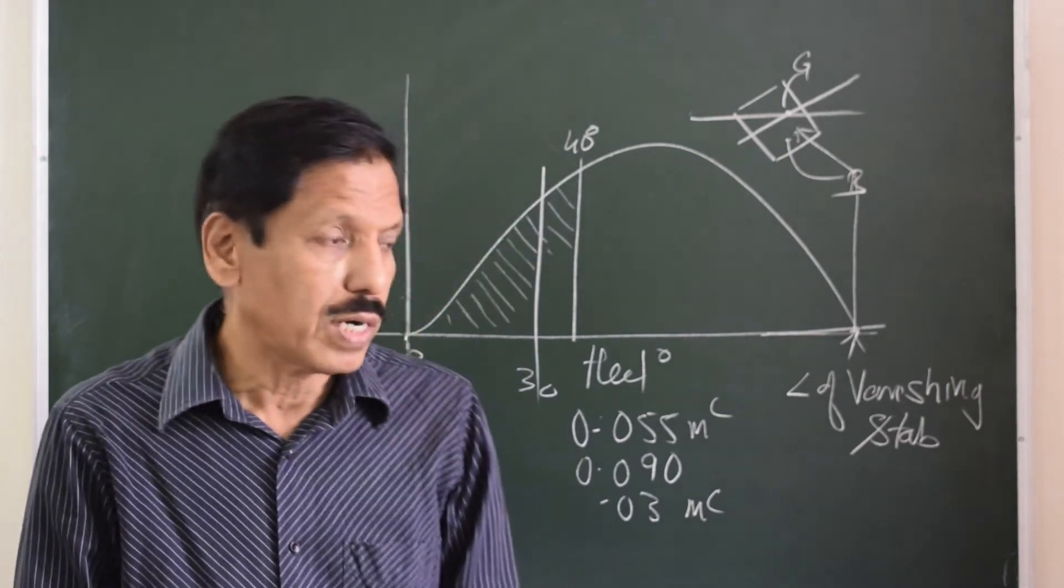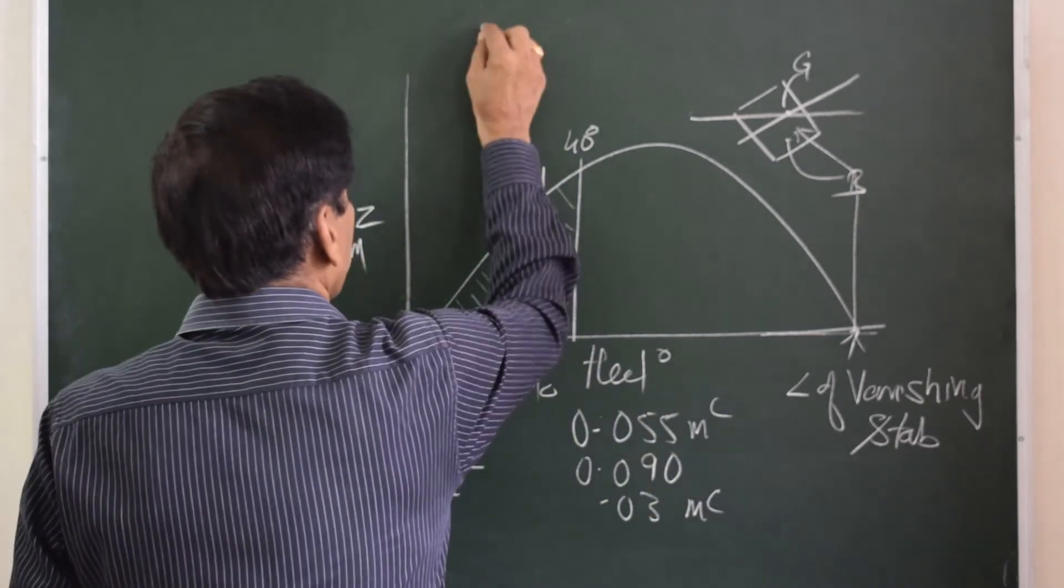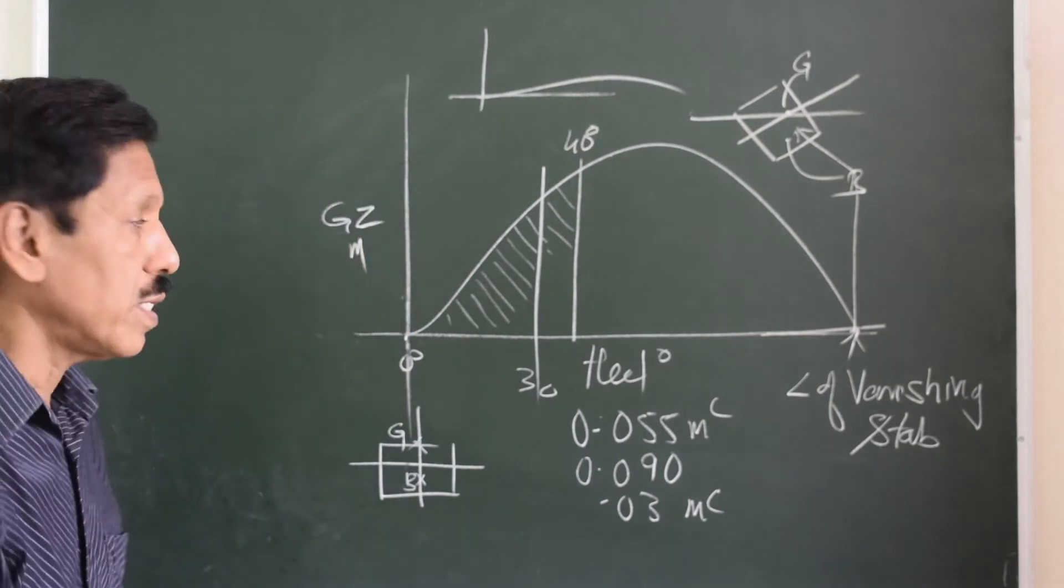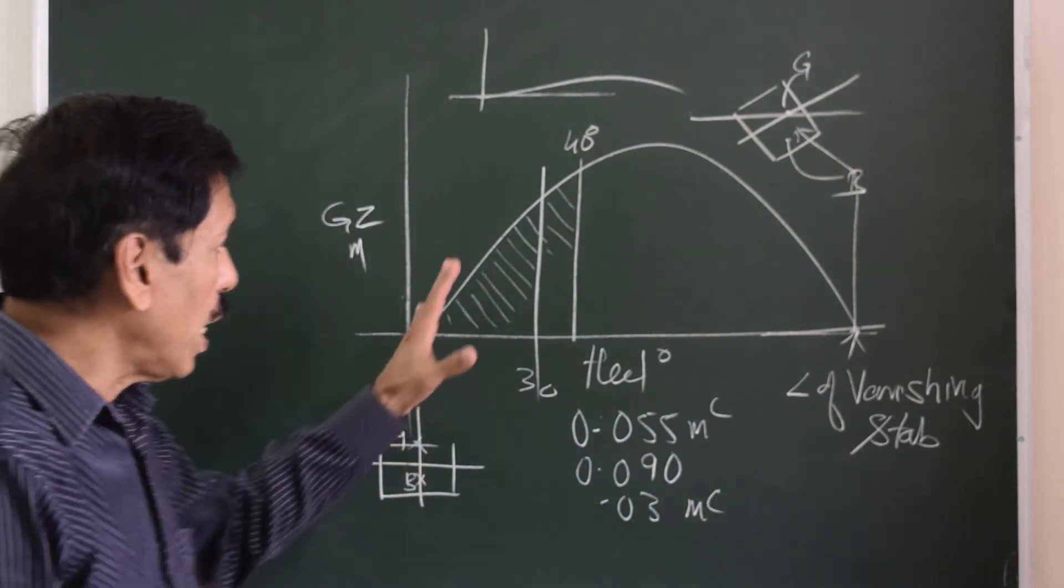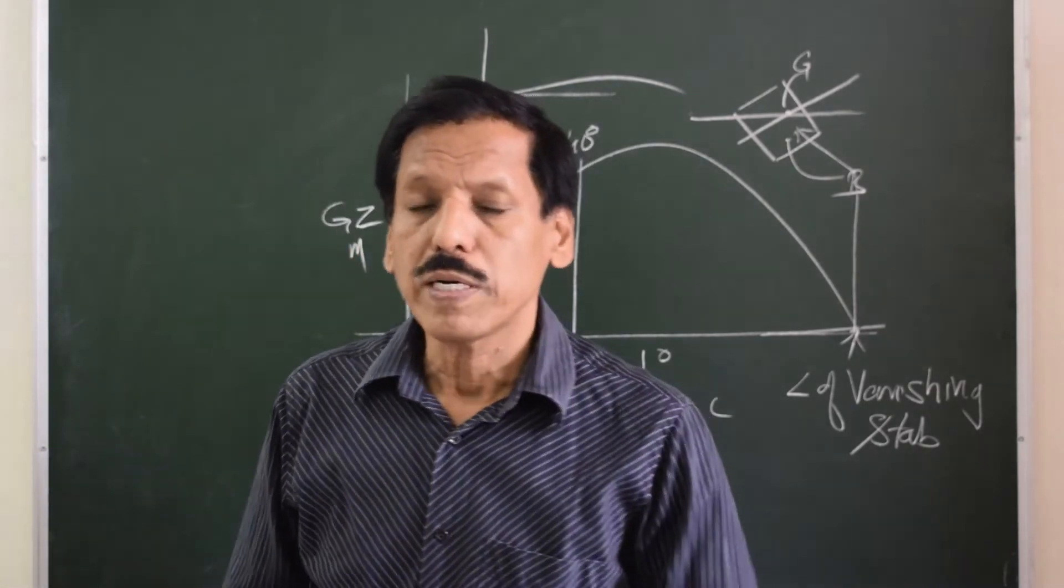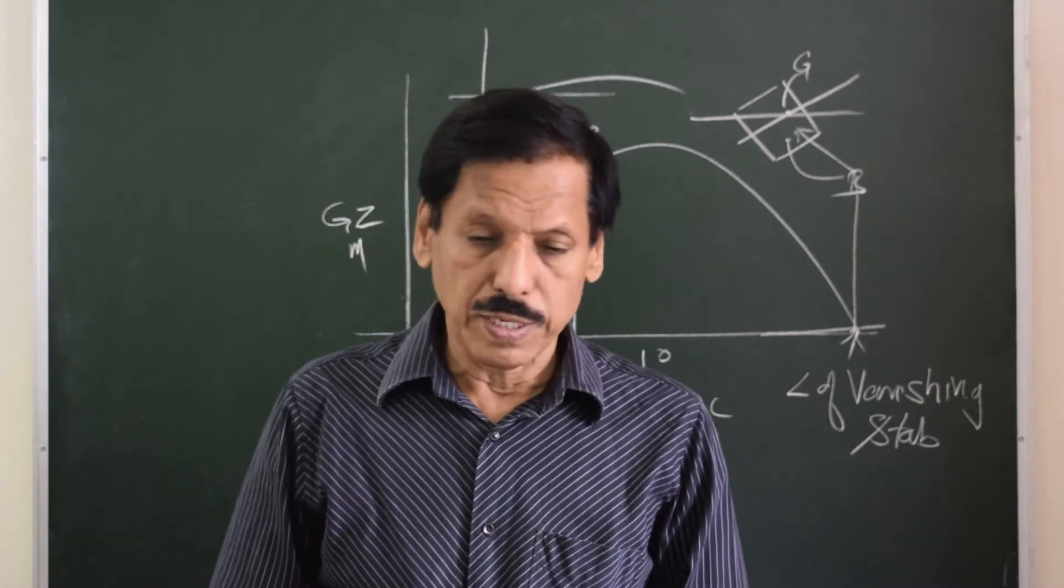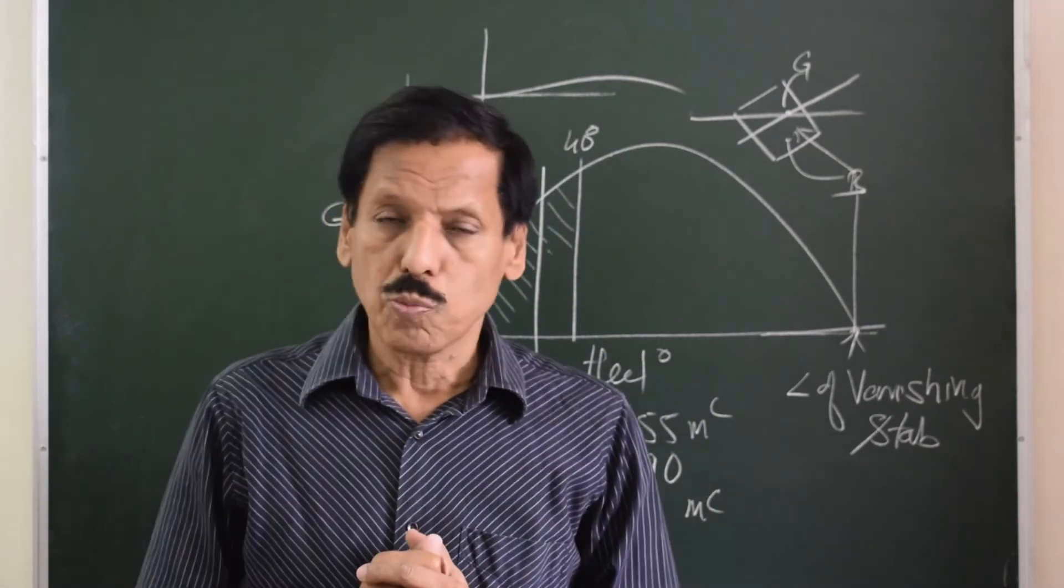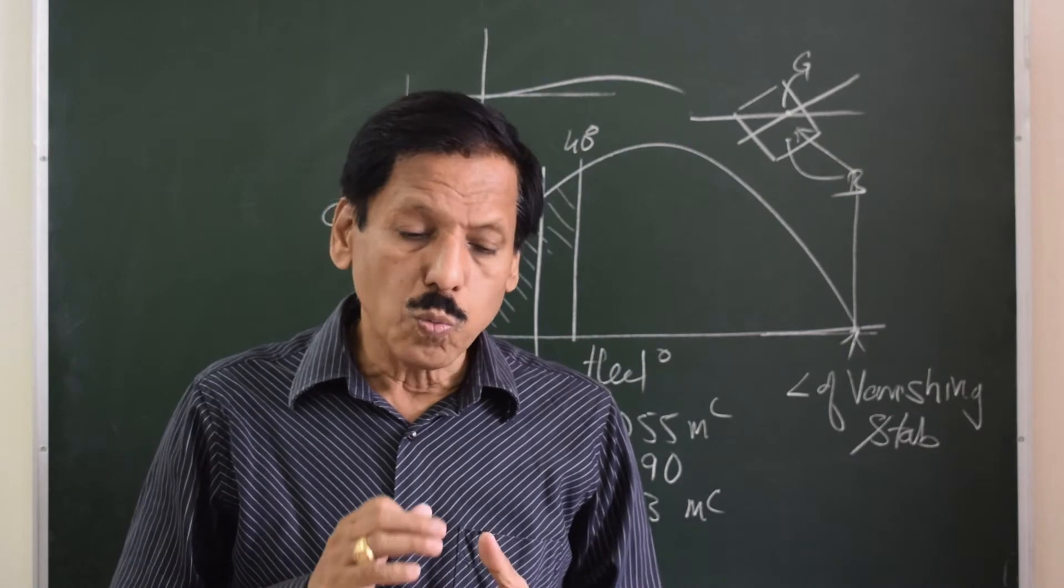So this is the requirement about the area. Why is area required? Can we have a ship whose GZ curve is like this? What is the necessity of area? Let me tell you, area is very important from dynamical stability point of view.